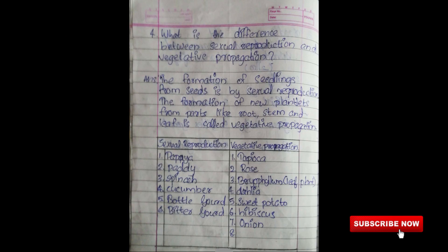Fourth question: What is the difference between sexual reproduction and vegetative propagation? Answer: The formation of seedlings from seeds is by sexual reproduction. The formation of new plants from parts like root, stem, and leaf is called vegetative propagation.